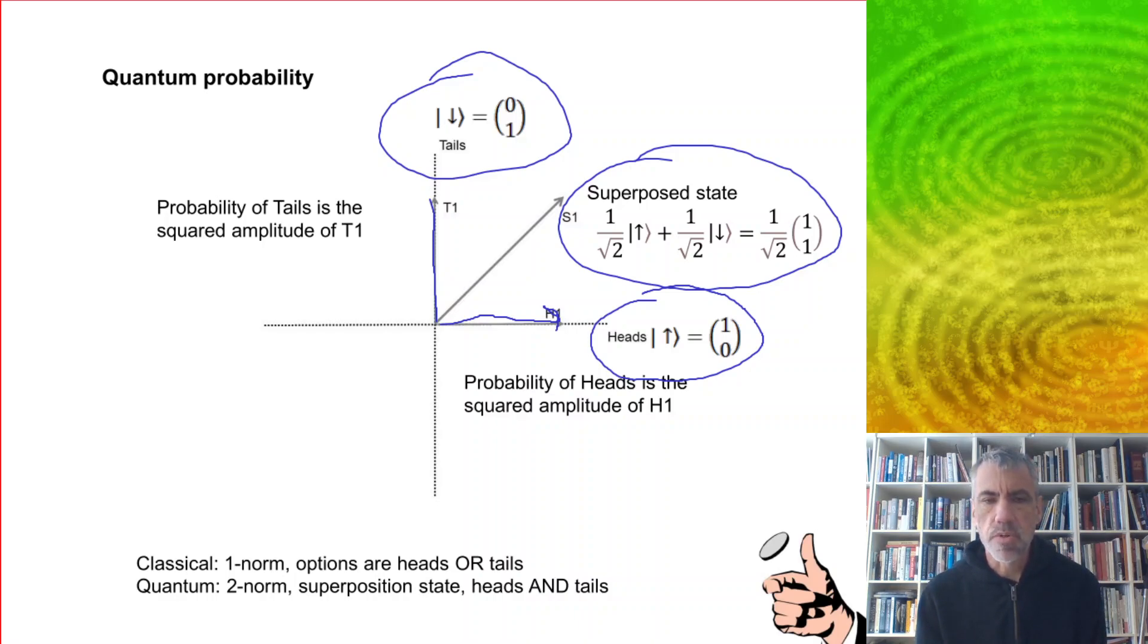So the basic difference between classical probability and quantum is that classical uses what's called the one norm, so the options are heads or tails. Quantum uses this two norm. It involves the square in order to take the norm, and you get this superposition state, which is kind of a mix of heads and tails.